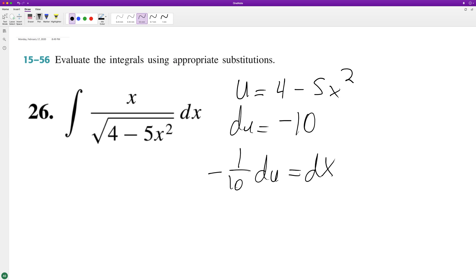So what we end up with here is negative 1 over 10 integral of u raised to the negative one half. That's the same thing as a radical on the bottom du.